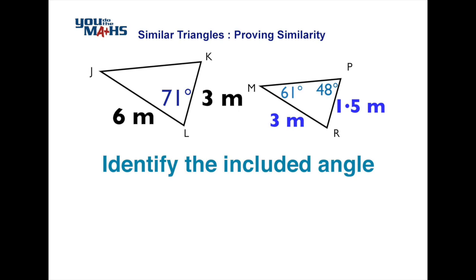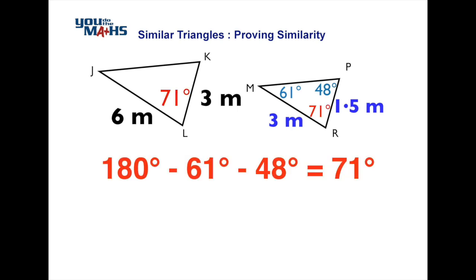In the other triangle we need to determine the missing angle. We do that by subtracting 61 and 48 from 180 degrees, and we get 71 degrees, so the angles do match. That's the first part of the condition for side-angle-side.